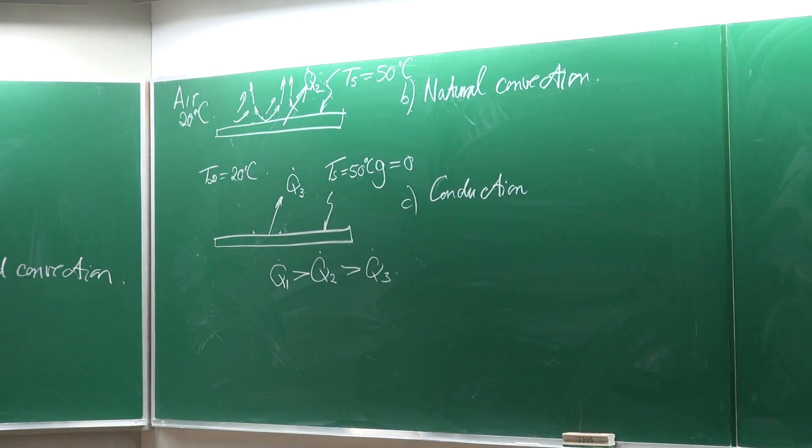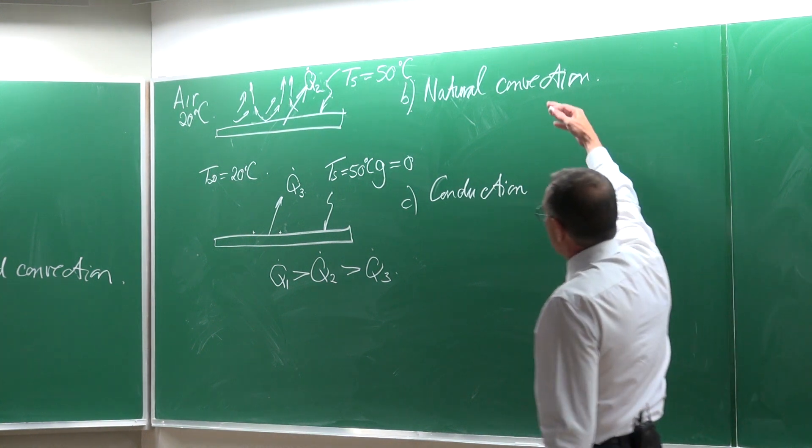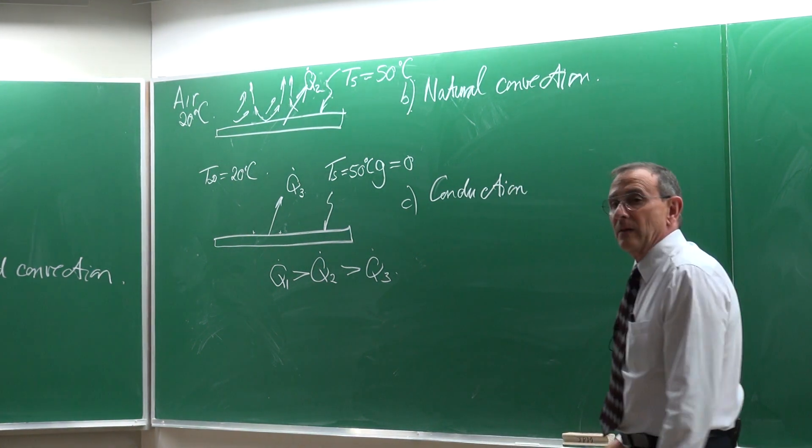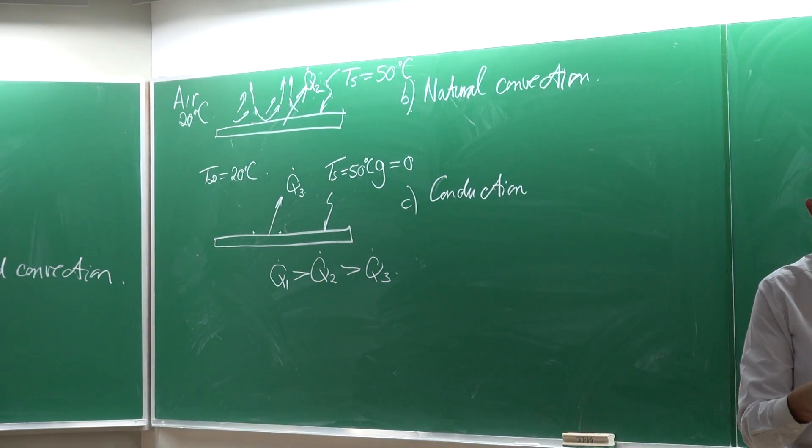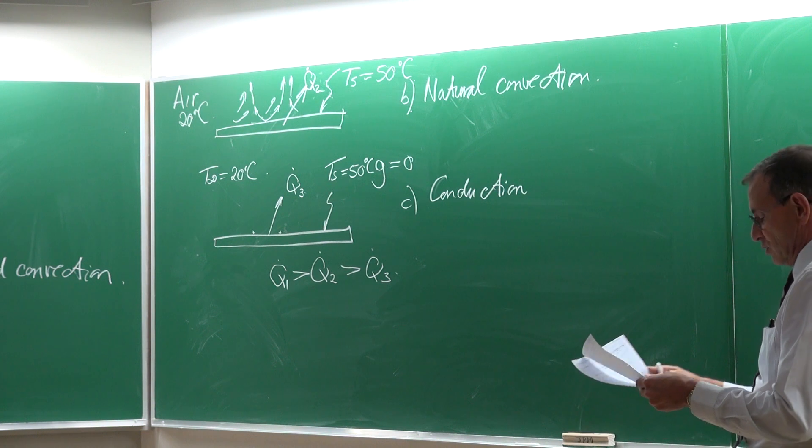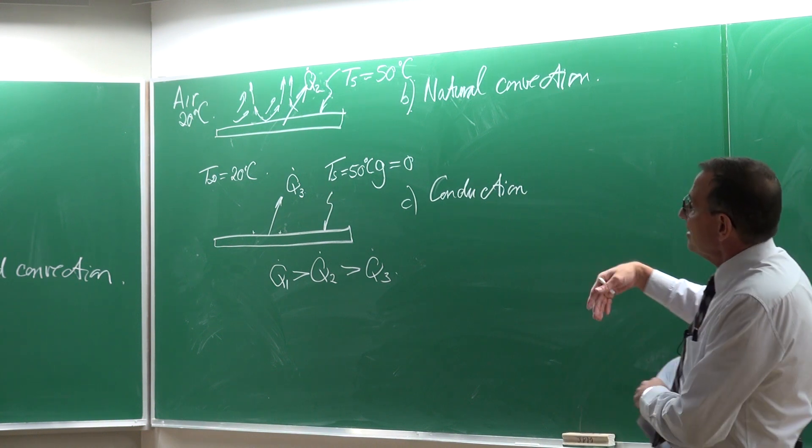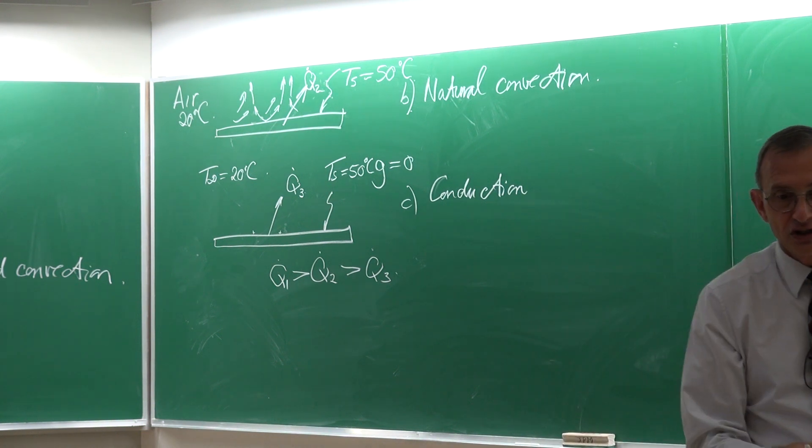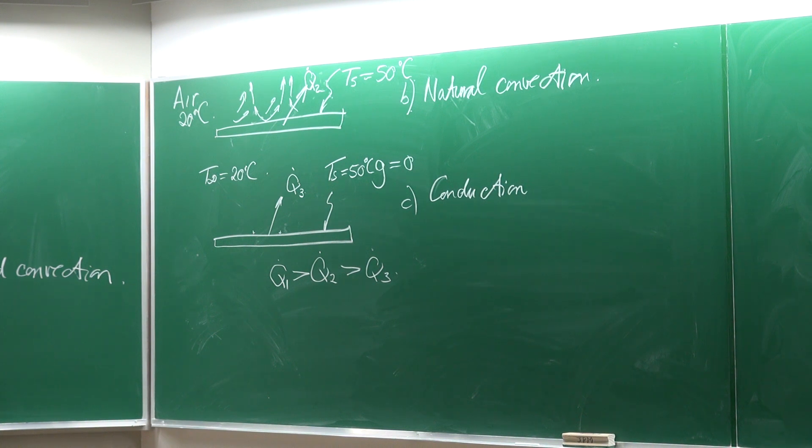So the heat transfer rate of the forced convection will be the highest followed by the natural convection and the one which is going to be the smallest is the conduction case. So in general we can say the higher the fluid motion the higher the heat transfer coefficient, the higher the heat transfer will be.